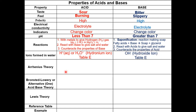There are three theories that identify and explain the properties of an acid and base: the Arrhenius theory, the Brønsted-Lowry theory, and the Lewis theory. The Arrhenius and Brønsted-Lowry theories are on the Regents, while the Lewis theory is not on the Regents.